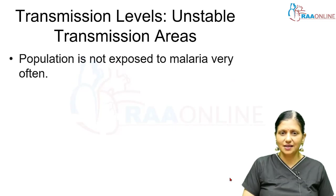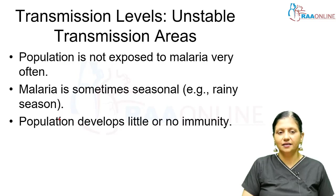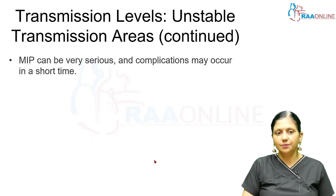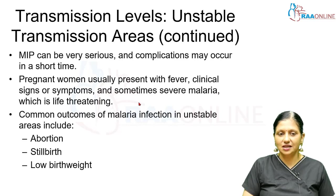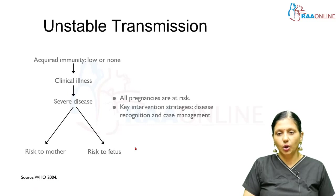In unstable transmission areas outside Africa, the population is not exposed to malaria very often — sometimes only in the rainy season. People in unstable areas do not have immunity, so all individuals including children, adults, and pregnant women are equally susceptible. Malaria in pregnancy in unstable areas can be very serious, with complications including abortion, stillbirth, and low birth weight. The key intervention strategy from the WHO is to identify the disease early and do case-by-case management.